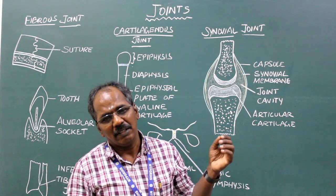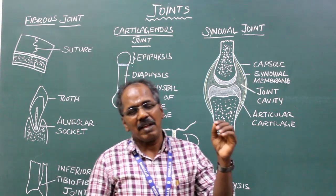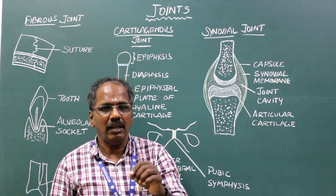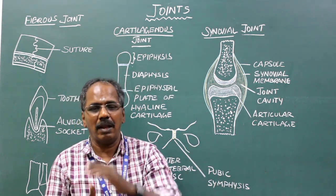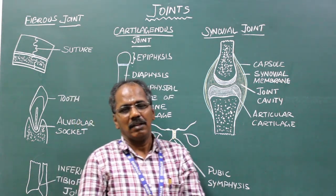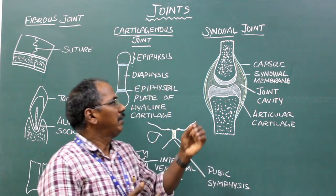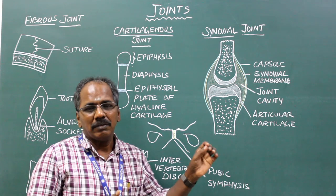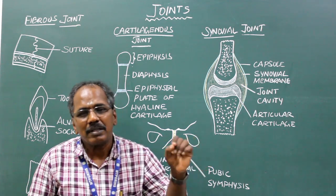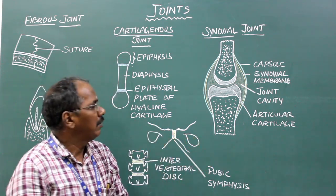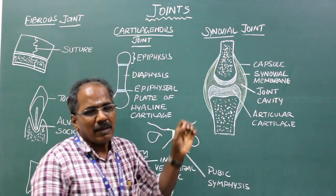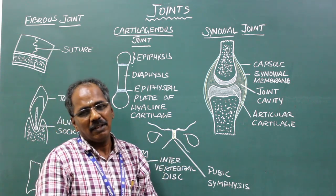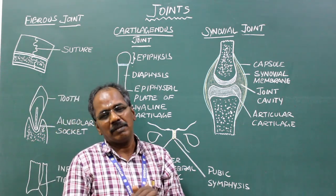Synovial Joint. The synovial joint is the joint with a cavity which is lined by synovial membrane. General features: it has an outer covering known as a capsule which gives protection for the joint. The inner aspect of the capsule is lined by synovial membrane which secretes synovial fluid.